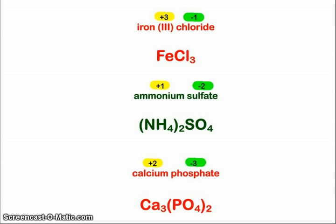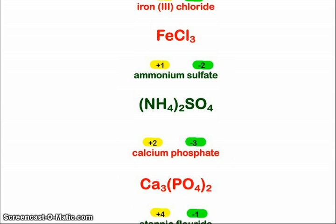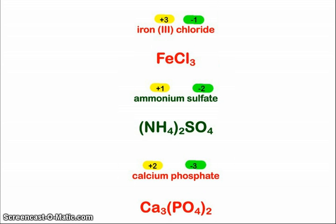Our last one, stannic fluoride. Stannic, oh, I'm sorry. We have calcium phosphate here. Calcium phosphate. Calcium is plus two on our super friendly ion card. Phosphate is a polyatomic ion, PO4 minus three. So that's why I need three of the calciums and two packages of phosphate.